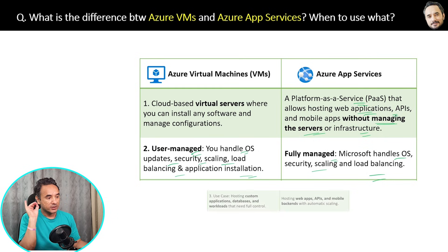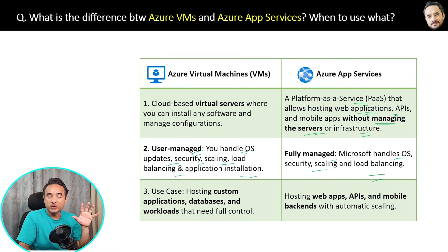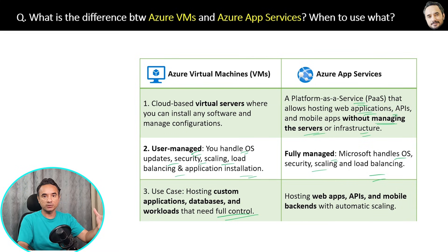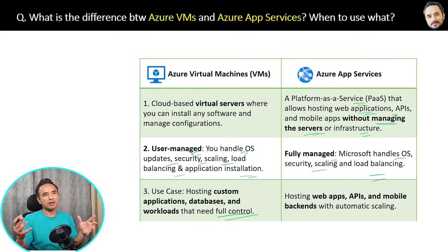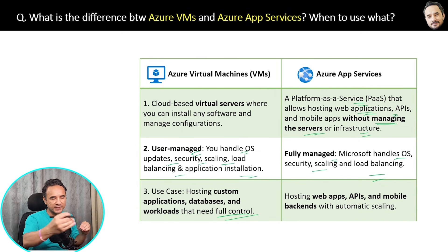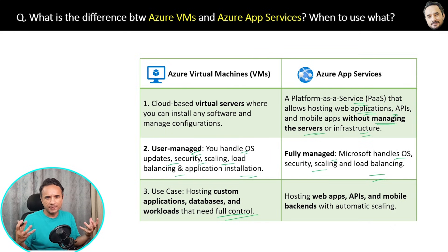When to use VMs: use VMs when you want to host very large custom applications, databases, and workloads where you need full control over everything. For example, if your application is a very large banking-related application and you cannot trust the auto-configuration and auto-security that Azure provides in App Service, then use Virtual Machines as raw servers and implement your own custom security infrastructure.